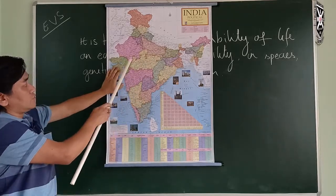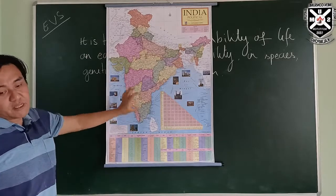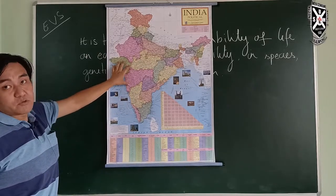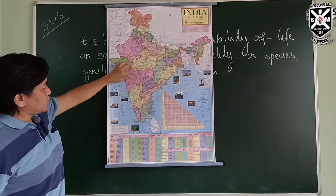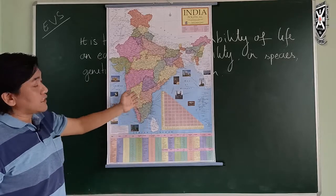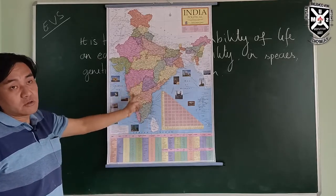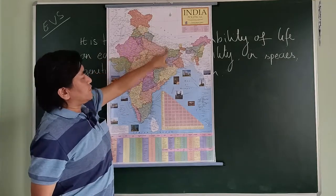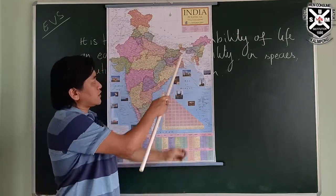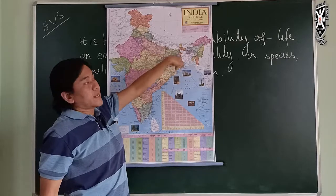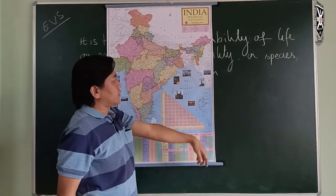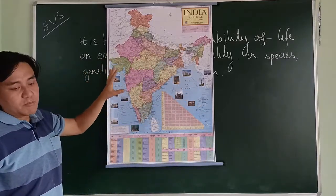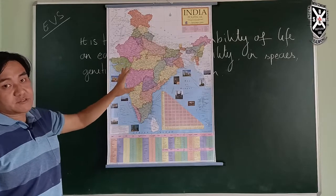For example, the Gir Forest is home to the Asiatic lion. Another area has the Red Panda zone, and yet another area is home to the Royal Bengal Tigers. India is one of the most biodiverse countries in the world.